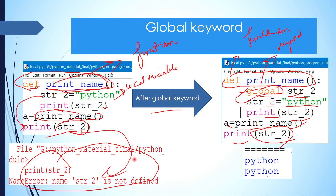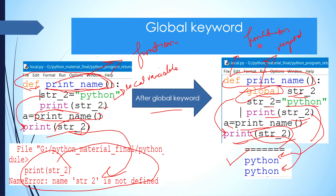Without the global keyword it was an error, but when we made it global, printing it outside worked. The first print came from inside the function call, and after that we printed it outside — because we declared it global inside the function, it became accessible outside as well.